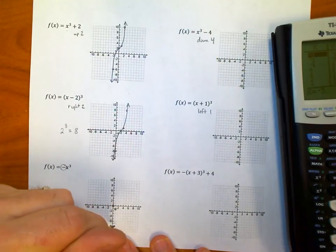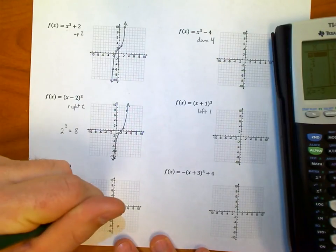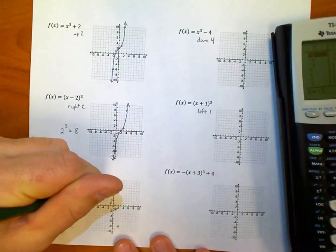I didn't move it at all. The center is still at (0,0), but now I go over one, down one; over two, down eight; over one, up one; over two, up eight. So my graph looks like this.